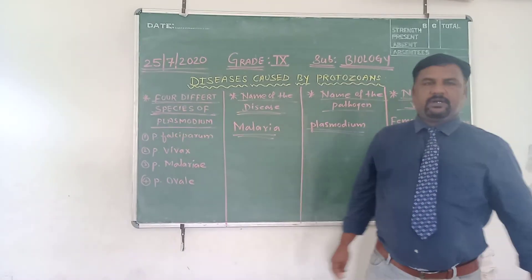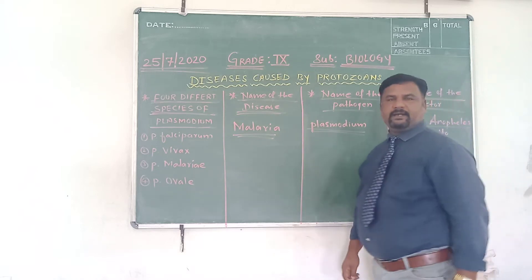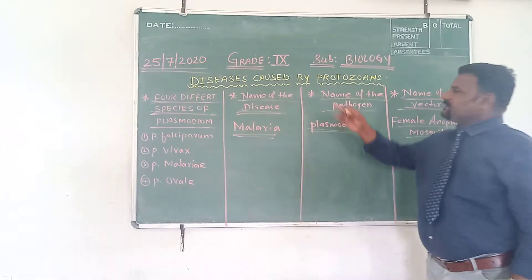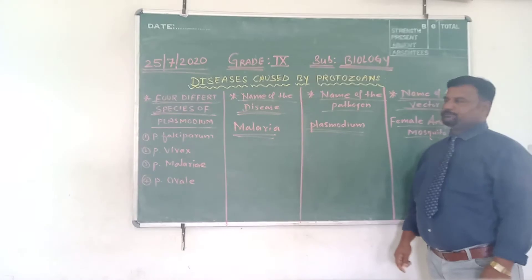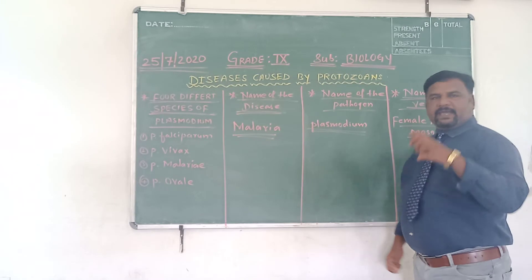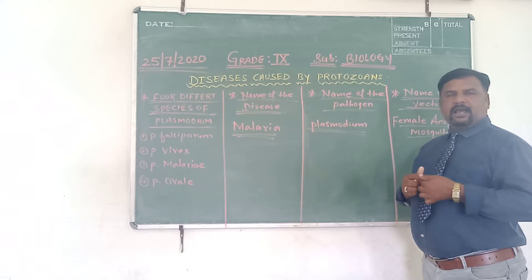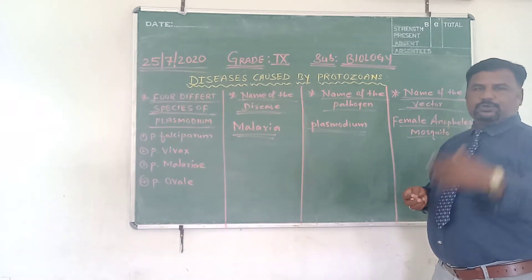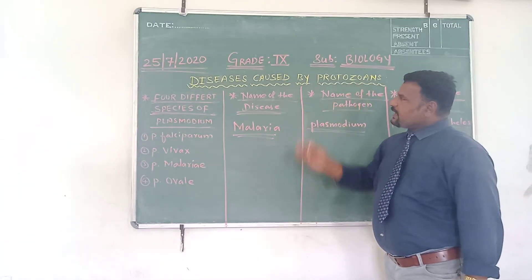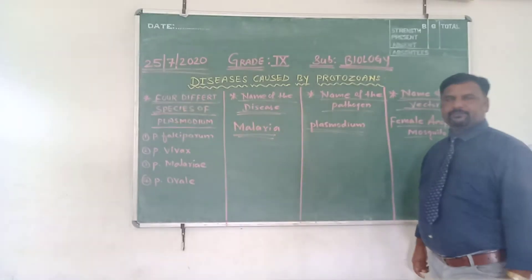Good morning children. In our previous class we discussed about diseases caused by bacteria and diseases caused by viruses. Today we will discuss about diseases caused by protozoans. As we are well aware, microorganisms are mainly classified into five categories: bacteria, virus, algae, fungi, and protozoans. Protozoans are a kind of microorganism, and in this class we will be discussing about the diseases caused by protozoans.